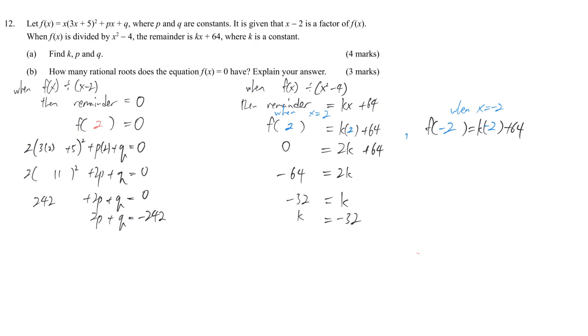Afterward, we evaluate the last one. We put x replaced by negative 2. Then 3 times negative 2 plus 5 whole thing squared, plus p times negative 2 plus q equals negative 2k plus 64. Negative 2 times negative 1 bracket squared. And k is negative 32, so negative 2 times negative 32. It's negative 2 times positive 1. This will be 1, 2, 8. Therefore we have the second equation.